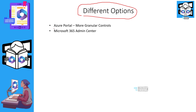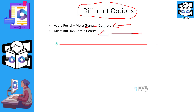What are the different options to provide the global reader role or message center reader role? There are two options. One: you can go to Azure Active Directory and provide more granular control from there. The other option is Microsoft 365 Admin Center — this is the easiest option because it is just a check mark, while Azure AD offers more granular options.